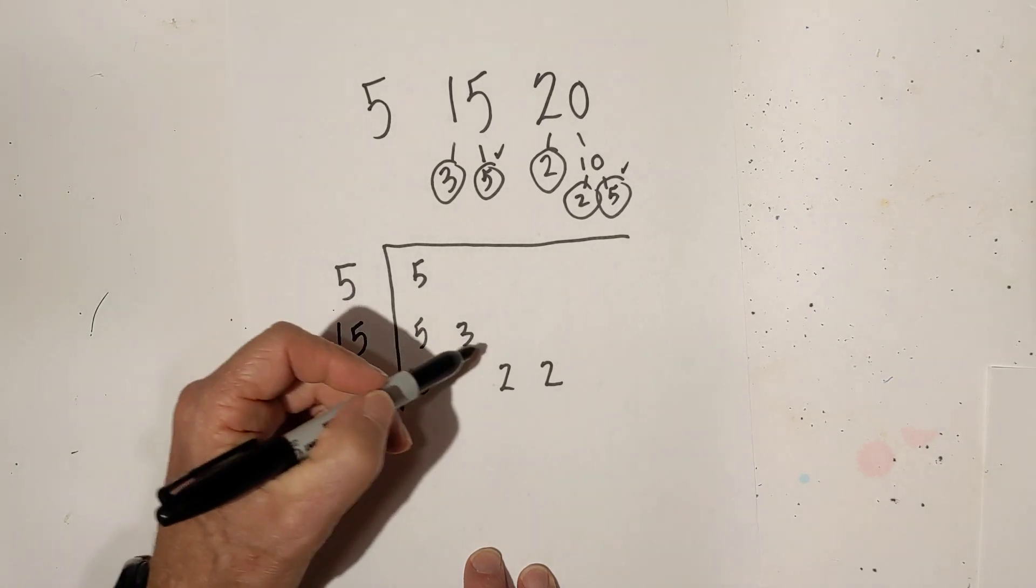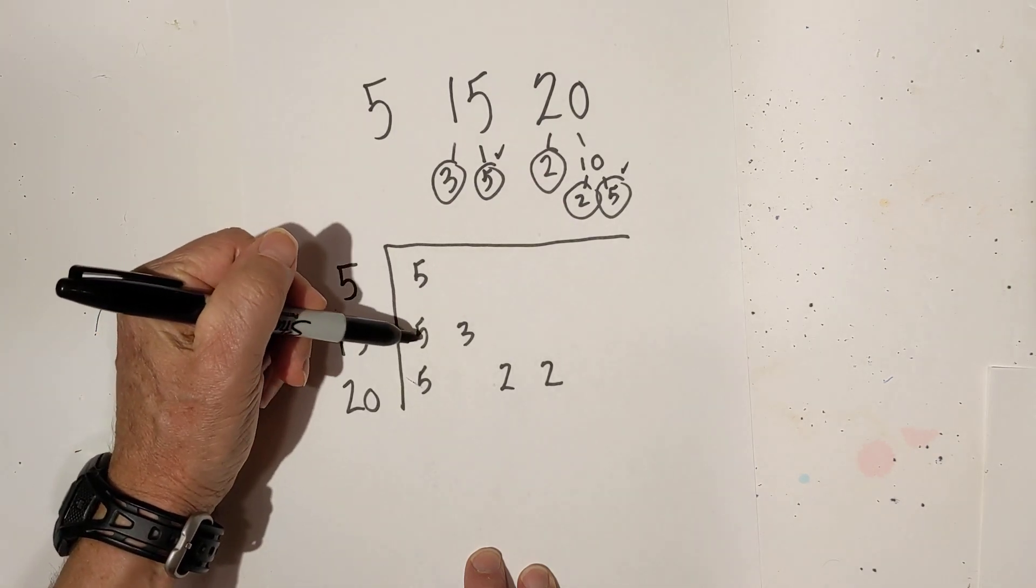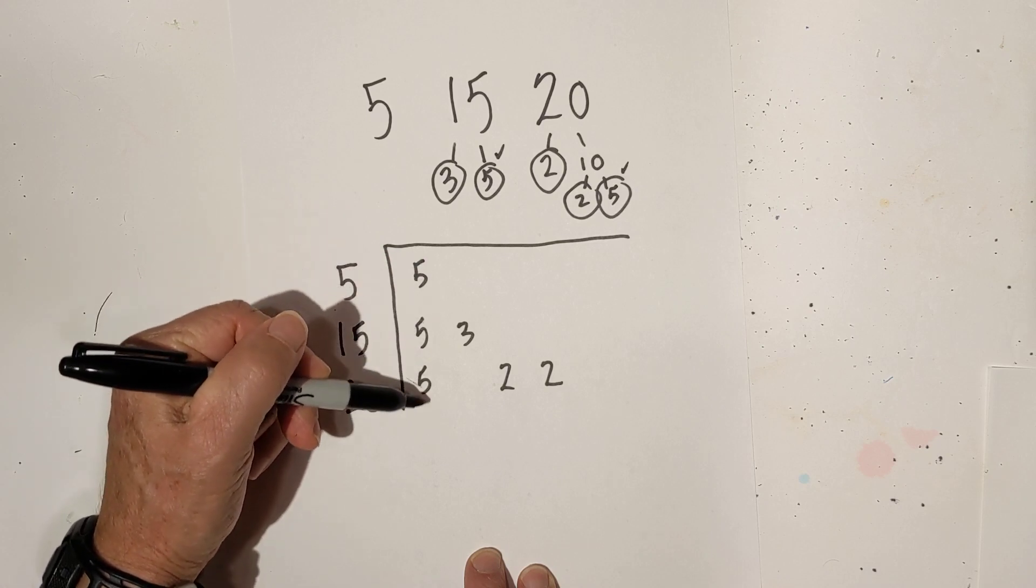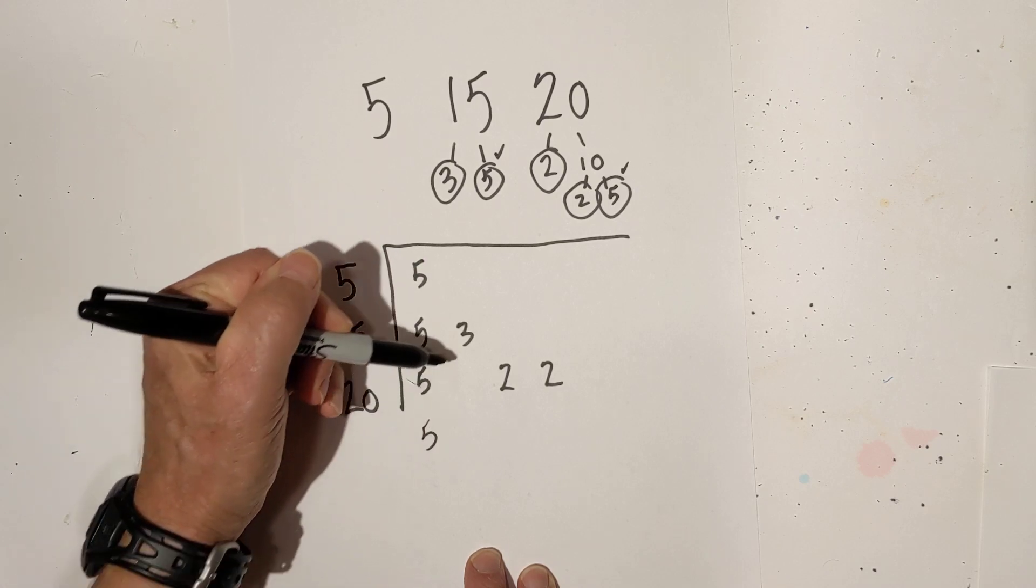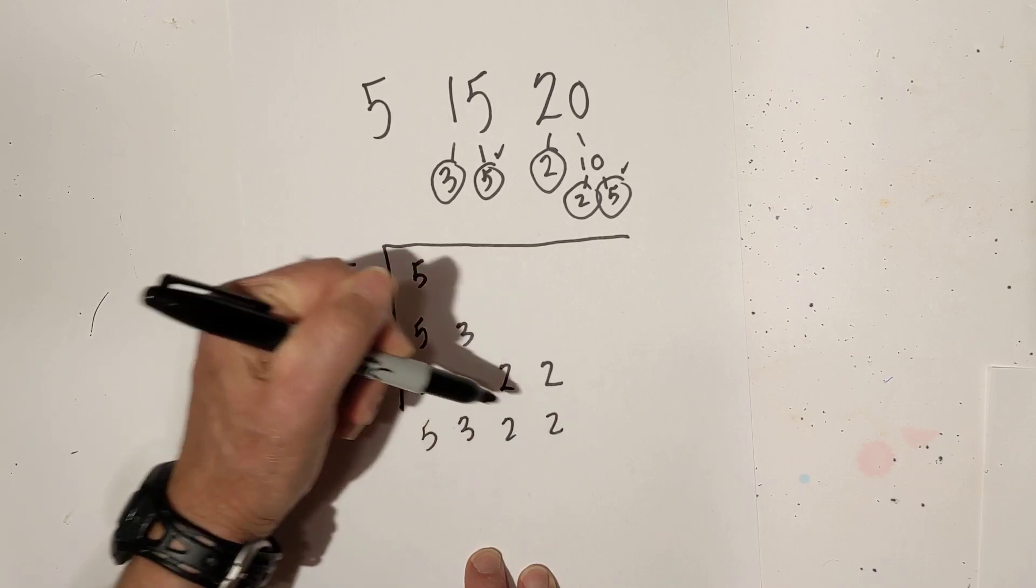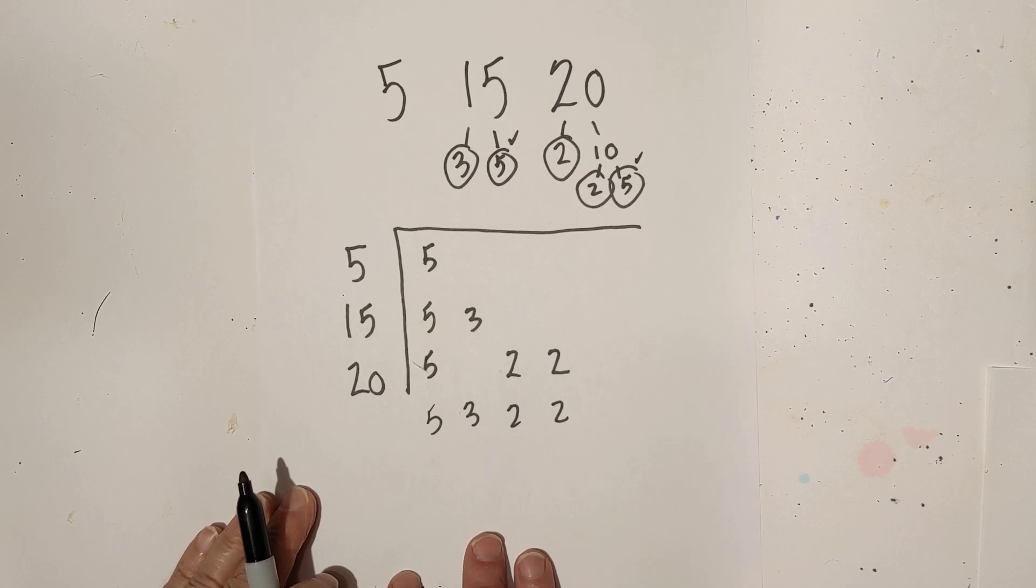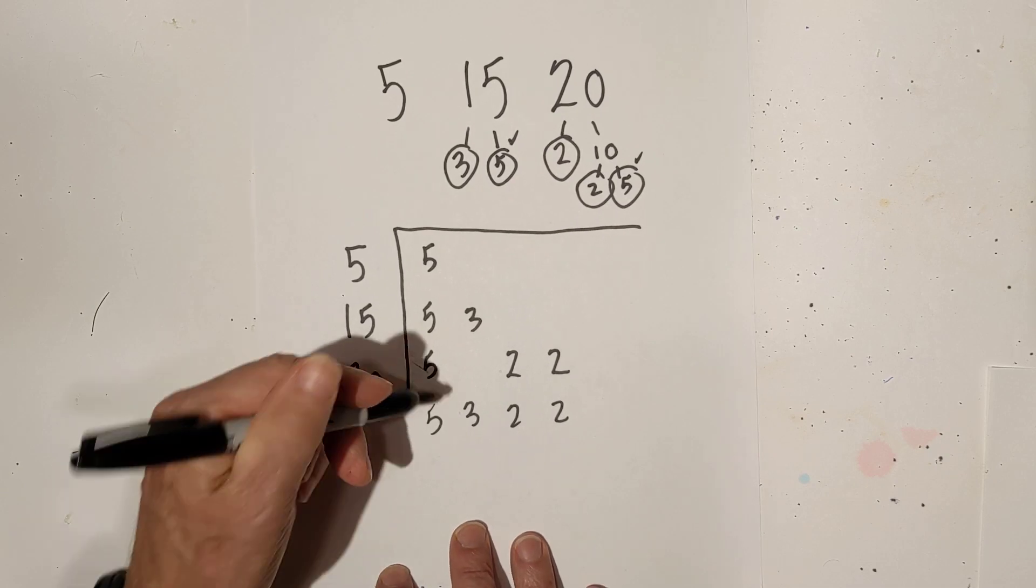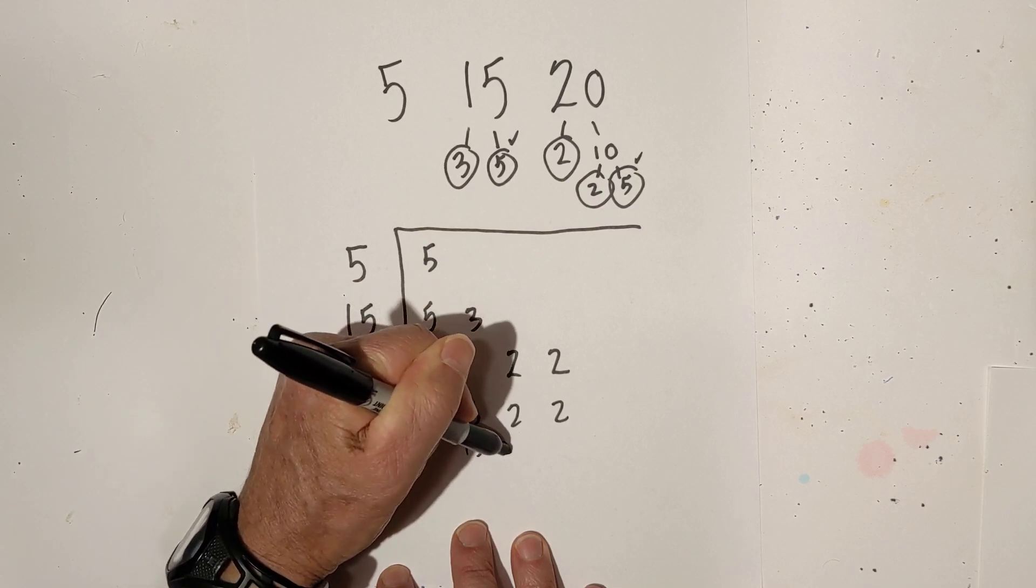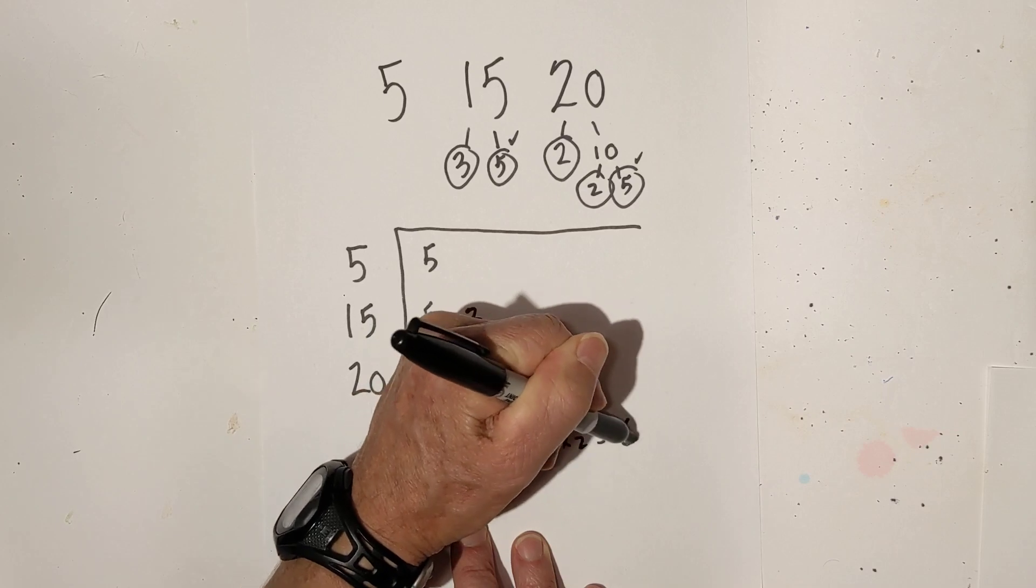Now all we do for the LCM is basically multiply these numbers together but follow this rule. If you have 2 or 3 of the same numbers, you only bring down 1. So I have 3 fives so I am going to bring down 1 five, 1 three, a 2, and a 2. Then all we do is multiply that together.